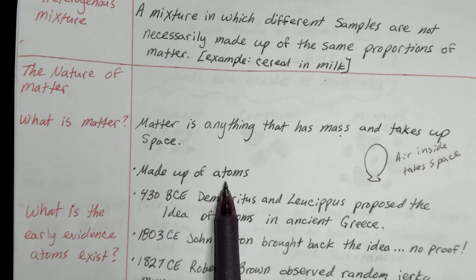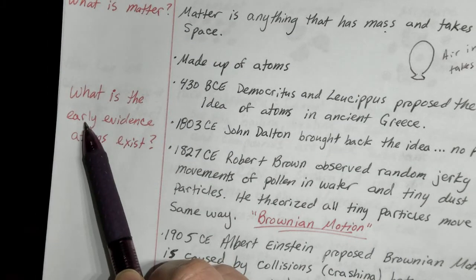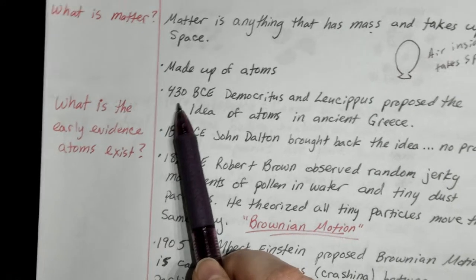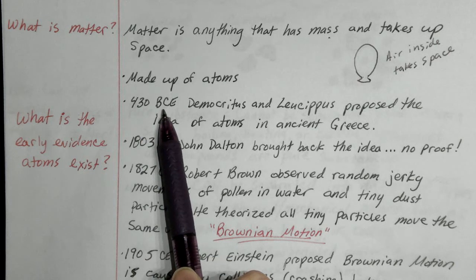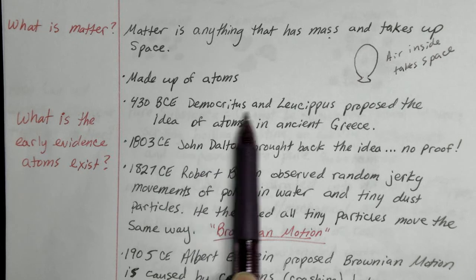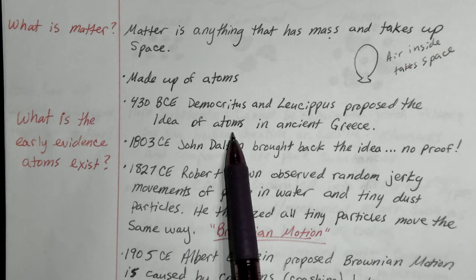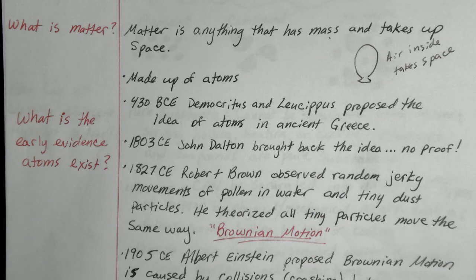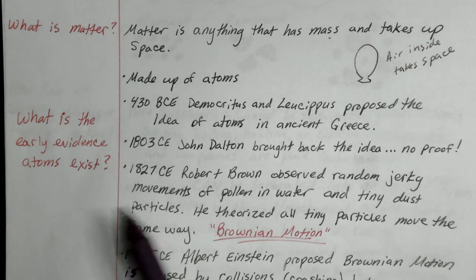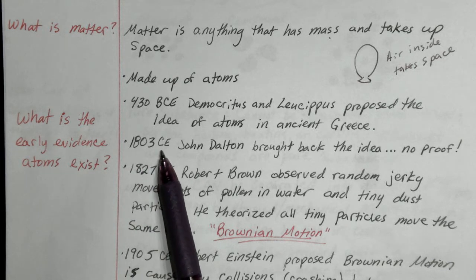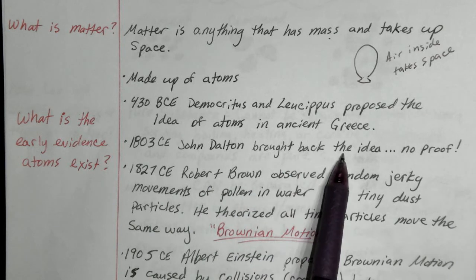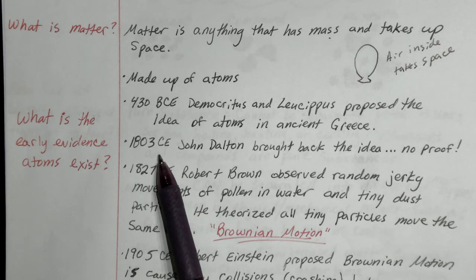All matter is made up of atoms. So what is the early evidence that atoms exist? Way back in 430 BCE — about 2,451 years ago — two people in Greece, Democritus and Leucippus, proposed the idea of atoms. They figured it might be something really tiny that they couldn't see. Then in about 1803, only 228 years ago, John Dalton brought back the idea, but he didn't have any proof — he thought maybe atoms are a thing and maybe they do make up matter, but he didn't know how to actually prove it.